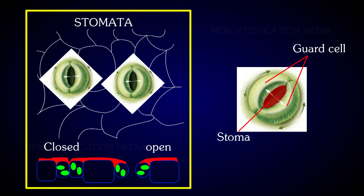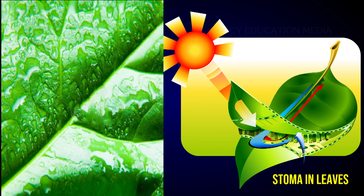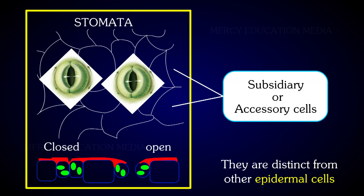The outer wall of epidermis is usually covered by cuticle. A stoma is a minute pore surrounded by two guard cells. The stomata occur mainly in the epidermis of leaves. In some plants such as sugarcane, the guard cells are bounded by some special cells distinct from other epidermal cells. These cells are called subsidiary or accessory cells.